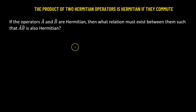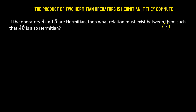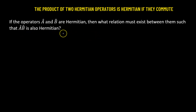In this particular problem we have two operators A and B and both are Hermitian. Using this fact we have to obtain a relationship between these two operators such that the product AB is also Hermitian. So let us first define what it means when we say that a particular operator is Hermitian.